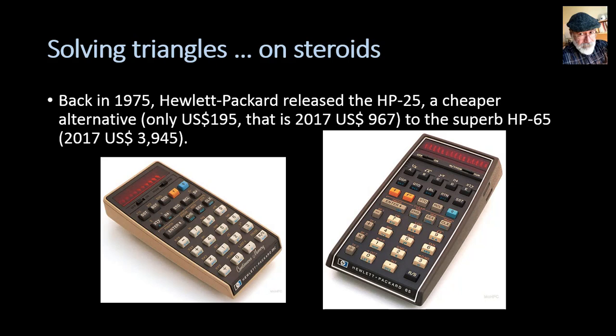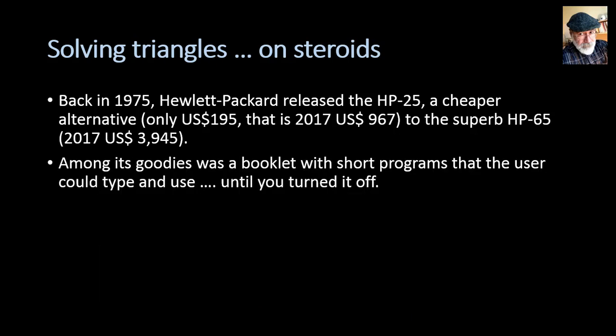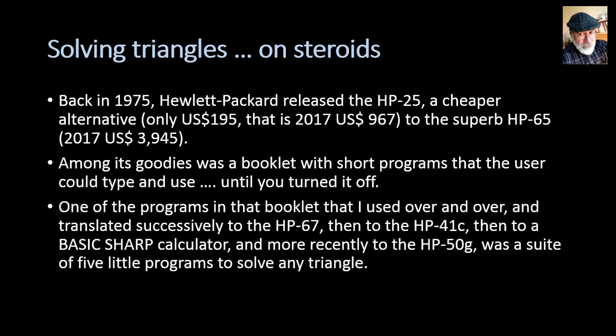Back in 1975, Hewlett-Packard released the HP-25, a cheaper alternative to the superb HP-65. In 2017 American dollars, the 65 would have gone for $4,000 and the cheaper HP-25 went only for about $1,000 of today's dollars. Among the goodies that came with the 25 was a booklet with short programs that the user could type and use until you turned it off.